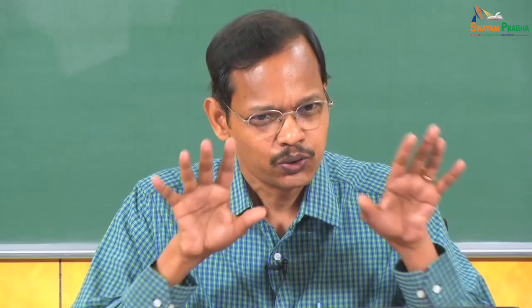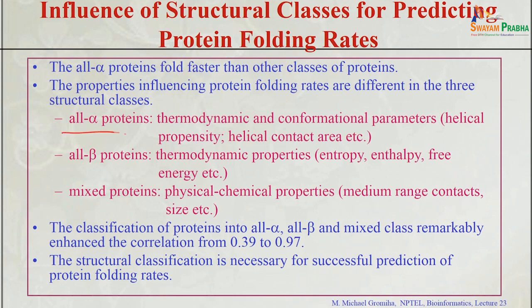Native state topology determines the folding type of a protein. The different structural classes are alpha, beta, and mixture (containing both). If we classify proteins into these classes and then use their properties, we incorporate topological aspects. All alpha proteins showed conformational parameters as important; all beta proteins were influenced mainly by thermodynamic properties; and mixture proteins were influenced by physicochemical properties. Classifying proteins into alpha, beta, and mixture classes significantly enhanced the correlation.